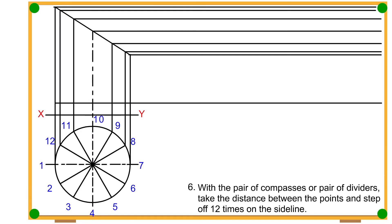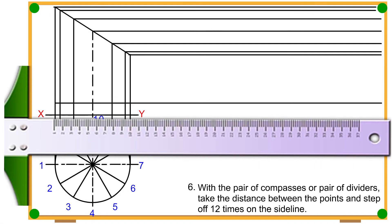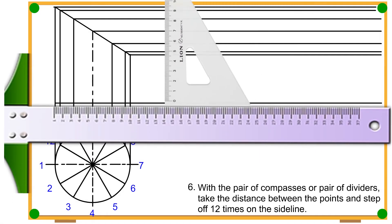Step 6: With a pair of compasses or pair of dividers, take the distance between the points and step off 12 times on the sideline.